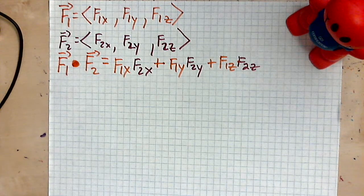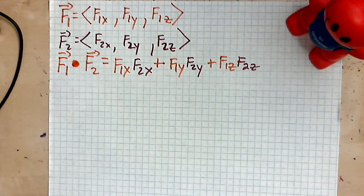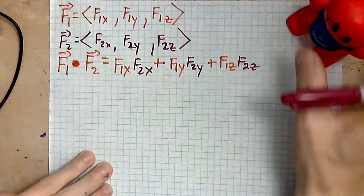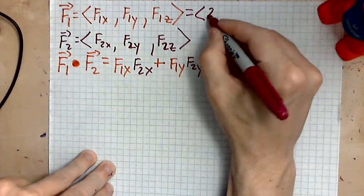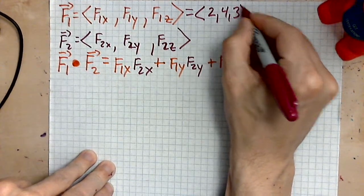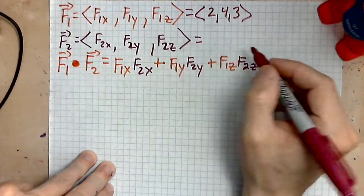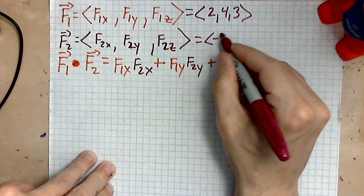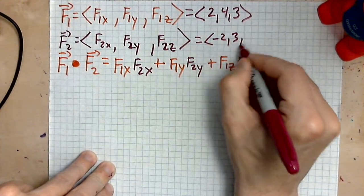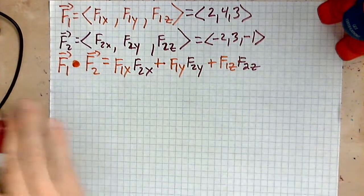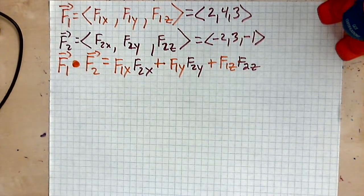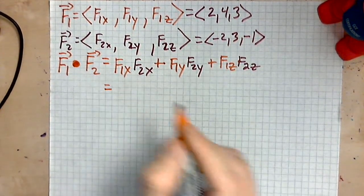So now let's apply this to find one particular dot product. Say we are given that F1 over here has the specific numbers 2, 4 and 3 as its components. And then F2 has the specific numbers negative 2, 3 and negative 1 as those x, y and z components. So let's apply the definition. The definition simply says, multiply and add.